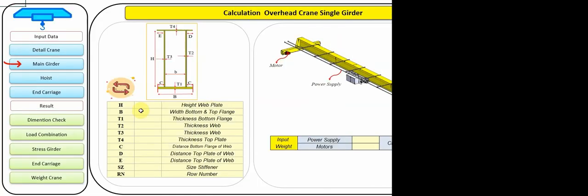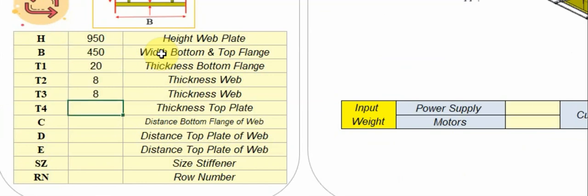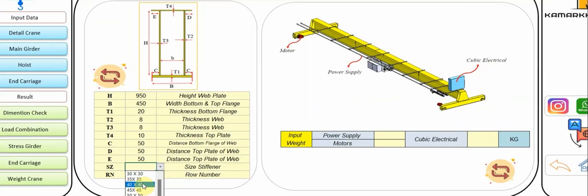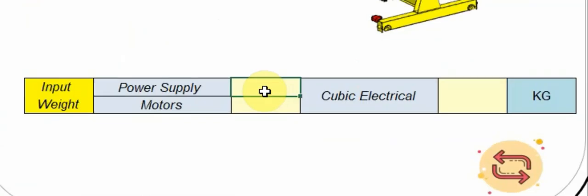In this step, you have to enter the box girder data. These data are approximate and based on the purchased sheets, and determine the height of the web and the width of the box by calculating the length of the plate. In the next steps, if the design standard is not met, you should go back to this step and correct this value.